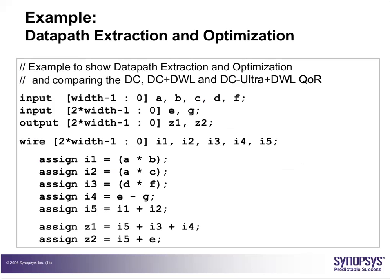Let us look at this example. This module has inputs and outputs. There are in fact 7 operations taking place: i1 = a*b, i2 = a*c, ip = d*f, i4 = e-g, i5 = i1+i2, z1 = ip+i5+i4, and z2 = i5+i4. These are 7 operations taking place in your RTL.